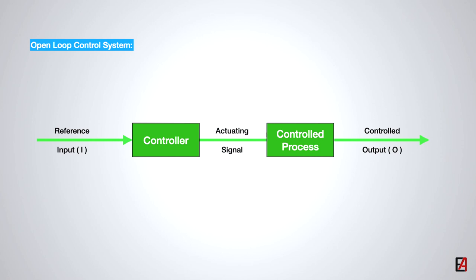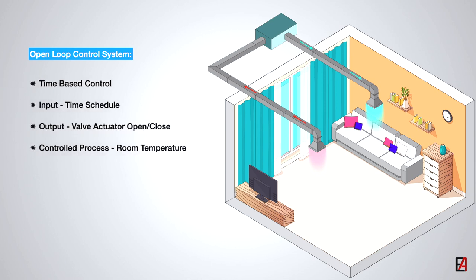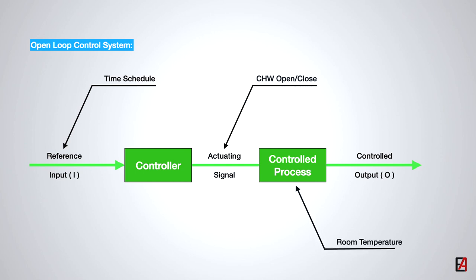To understand this, let's take a living room conditioned by a fan coil unit. Consider this FCU works on a time-based temperature control sequence, where the chilled water control valve is opened and closed based on a defined time interval to maintain the room temperature. The defined time schedule is the input to the controller, the actuating signal is the output to open or close the control valve actuator, the control process is the room temperature control, and the controlled output is the amount of chilled water fed to the cooling coil.